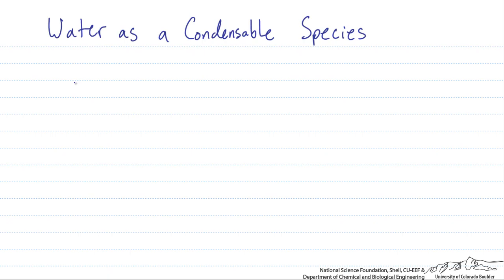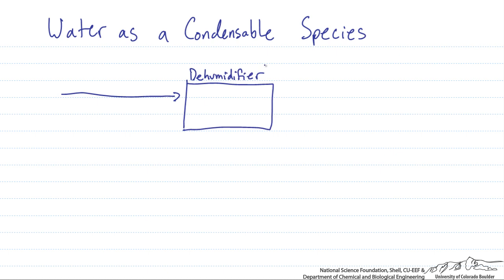In this screencast we will look at water as a condensable species. In many systems water is present in a gas stream and can be condensed out. Let's make our system — we have a dehumidifier, and coming in we have a stream of water and air.